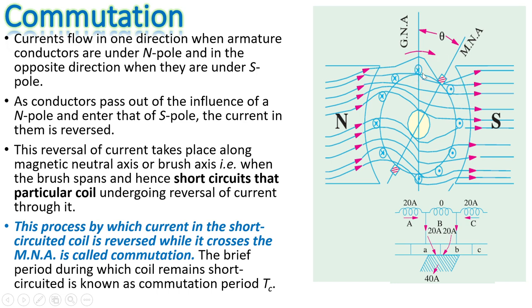As conductors pass out of the influence of the north pole and move under the south pole, the current in them changes direction — if the current was negative it becomes positive. This reversal of current takes place along the magnetic neutral axis or brush axis, when the brush spans and short-circuits the particular coil undergoing reversal. This process by which current in the short-circuited coil is reversed while it crosses the magnetic neutral axis is called commutation. The brief time during which the coil remains short-circuited is known as commutation time or commutation period tc.